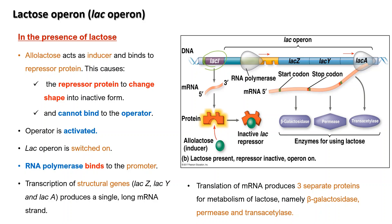The regulatory gene lacI is continuously expressed, therefore producing small amounts of repressor protein. In the presence of lactose, allolactose acts as an inducer and binds to the repressor protein. This causes the repressor protein to change shape, hindering it from binding to the operator. The operator is activated and the lac operon is switched on. RNA polymerase binds to the promoter and the structural genes lacZ, lacY, and lacA are transcribed into a single long mRNA strand. Translation of the mRNA produces three separate proteins — beta-galactosidase, permease, and transacetylase — which are needed in lactose metabolism.